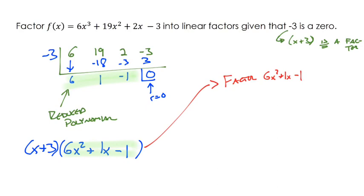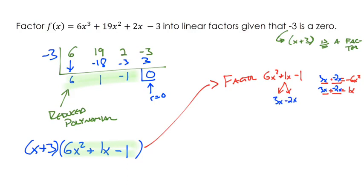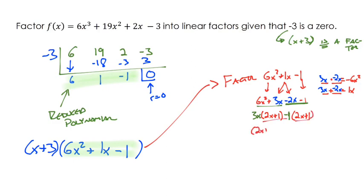We want to factor 6x squared plus x minus 1. We look for two numbers that multiply to give negative 6x squared (the product of the first and last terms) and add to give 1x. Those numbers are 3x and negative 2x. We break up the middle term into 3x and negative 2x, copy down the first term and the last term, then group. From the first two terms we factor out a GCF of 3x, and from the second two terms we factor out negative 1.